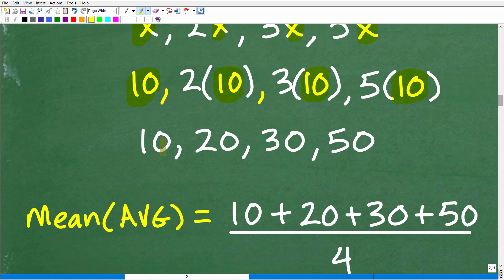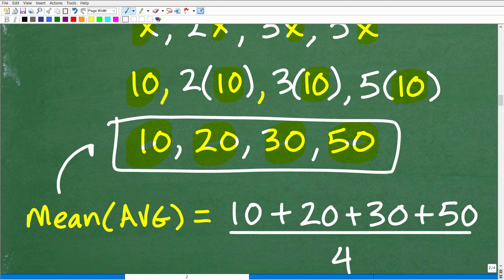So this is going to be super easy. So our values, our actual values is 10, 2 times 10 is 20, 3 times 10 is 30, 5 times 10 is 50. So now we're going to find the mean or the average of our data set, 10, 20, 30, and 50.